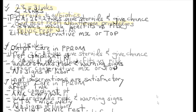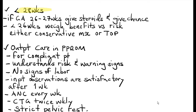Also advise pelvic rest, meaning no coitus. If the pregnancy is less than 28 weeks — say 26 to 27 weeks gestational age — you can give the patient a chance to carry to 34 weeks, but it carries increased risk of preterm labor, chorioamnionitis, and other complications. Give steroids and antibiotics. If the patient is less than 26 weeks gestational age, weigh the benefits against the risks; either wait to deliver at 34 weeks or consider terminating the pregnancy.